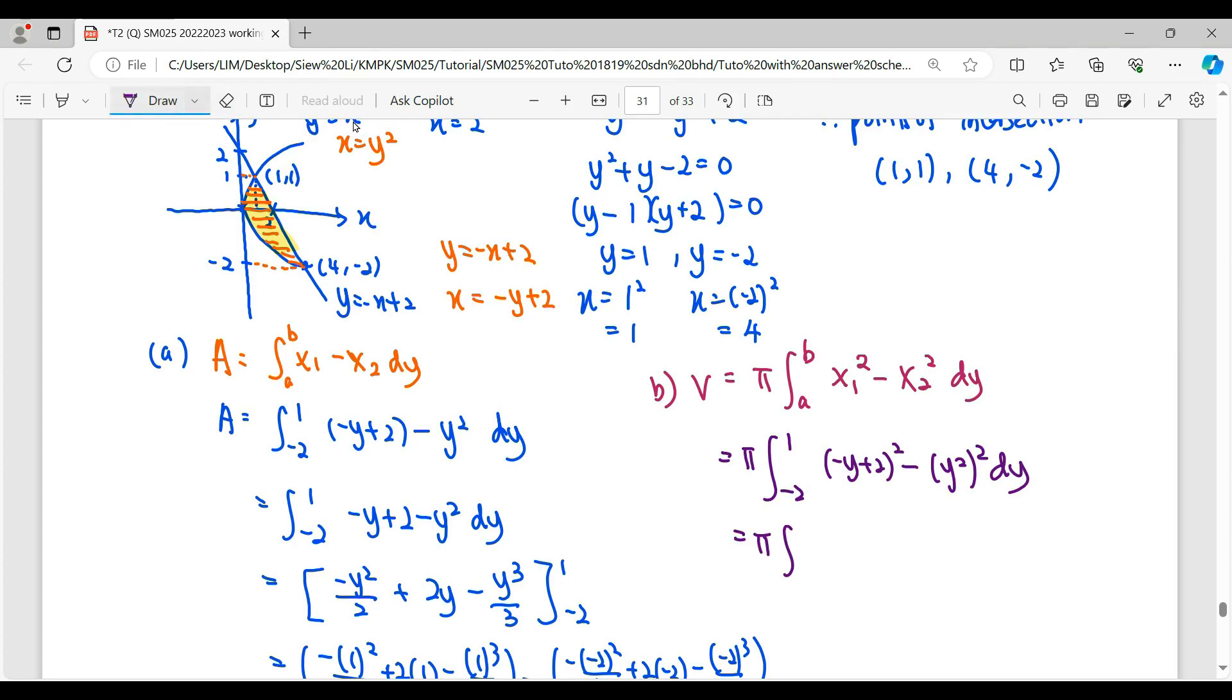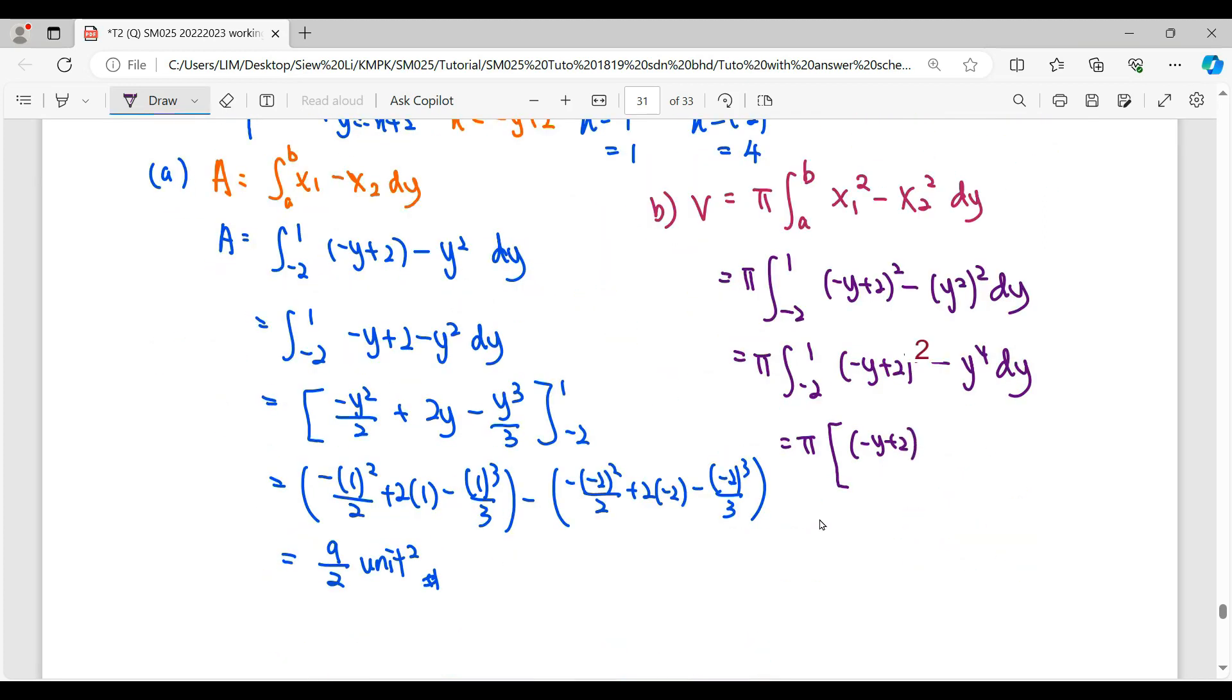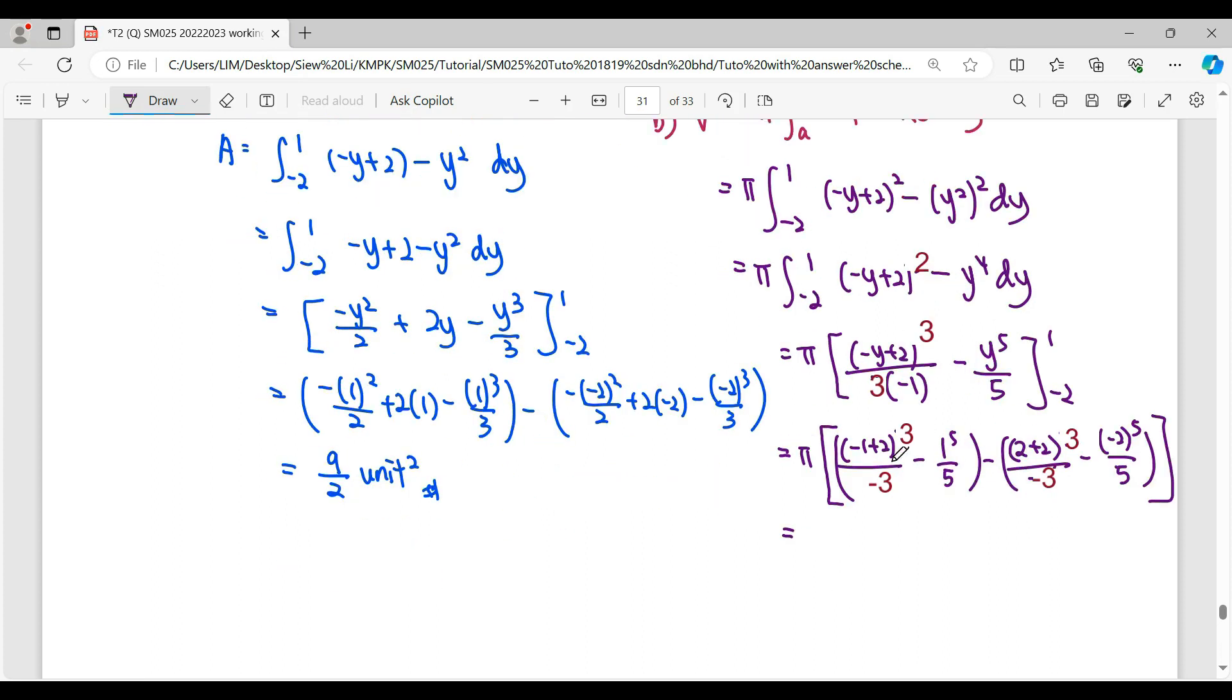Then we can simplify before we start integrate using formula. So this one, we can use formula in a bracket of linear. This one, square, becomes y to the power of 4. So to integrate a bracket of linear, power plus 1 over new power. Don't forget the coefficient of linear here, -1. Then minus power plus 1 over new power. Upper limit 1, lower limit -2. To perform the step where substitute upper limit minus lower limit. Then we can press calculator.